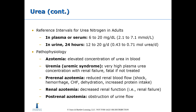Reference values for urea nitrogen in adults are provided. Regarding pathophysiology, azotemia is an elevated concentration of urea in the blood. Uremia, or uremic syndrome, is a very high plasma urea concentration associated with renal failure and is fatal if not treated — treatment includes dialysis or kidney transplant. Pre-renal azotemia results from reduced renal blood flow due to shock, hemorrhage, congestive heart failure, dehydration, or increased protein intake. Renal azotemia refers to decreased renal function, such as renal failure. Post-renal azotemia refers to an obstruction of urine flow.